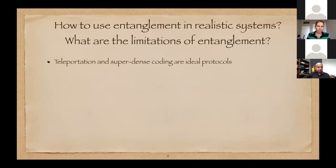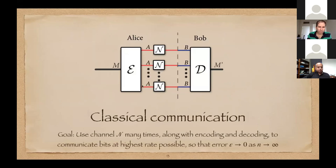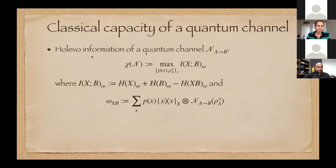The other way entanglement comes into play is that the codewords being transmitted could be entangled states. There are channels for which enhancements are possible from entanglement. To give you some taste of the theory for figuring out the capacity of a channel, you need to calculate something called Holevo information — an information quantity invented by Holevo in the 1970s, for which he proved various important statements.